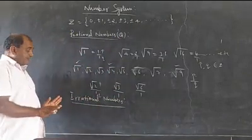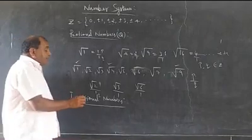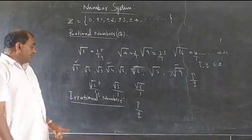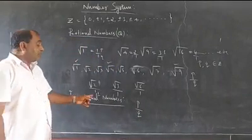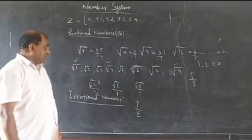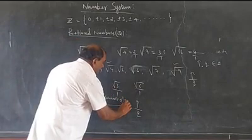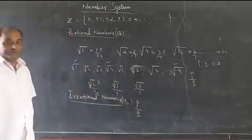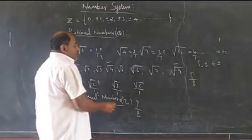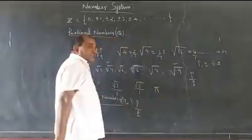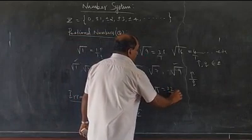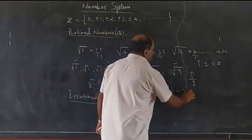So how do we define an irrational number? If you are not able to write a number in the form P by Q, such numbers are called irrational numbers. For example, pi is also an irrational number. Pi is approximately 22 by 7, and its decimal value is 3.14...